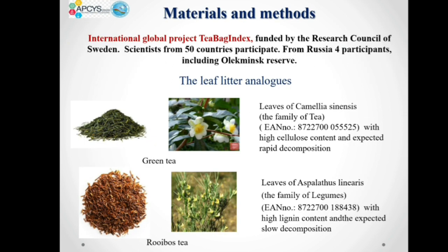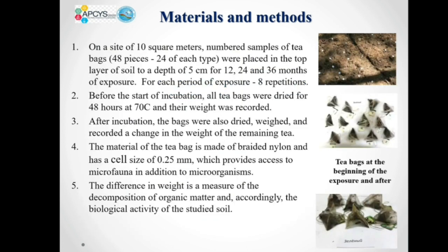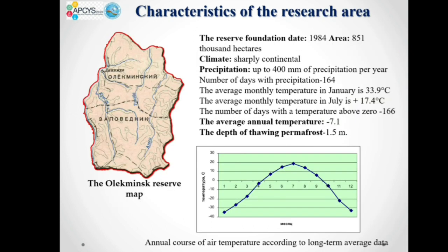In our study, two types of tea packaged in tea bags were used as analogues to the corresponding leaf litter. On a 10 square meter site, 24 green tea bags and 24 rooibos tea bags were placed equidistantly in the topsoil for 12, 24, and 36 months of exposure at room temperature using 8 biotope sets. After the exposure period, tea bags were dried and their dry weight was recorded. The organic matter decomposition was measured by the tea bag dry weight difference before and after exposure. Our study was conducted on the Alekminski State Natural Reserve area.